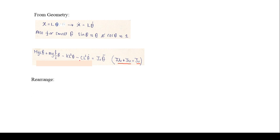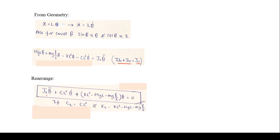The linearized equation has J_0 as the sum of the moment of inertia of the disk and rod about pivot O. Rearranging, we get: J_0·theta_double_dot + c·L²·theta_dot + (k·L² - Mg·L - mg·l/2)·theta = 0. This is the linear equation of motion, where c·L² is the equivalent damping constant c_t and k·L² - MgL - mg·(l/2) is the equivalent stiffness k_t.